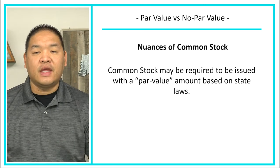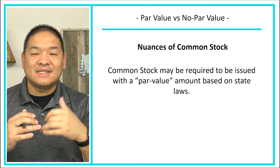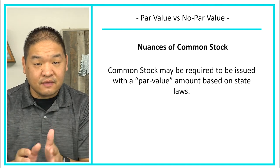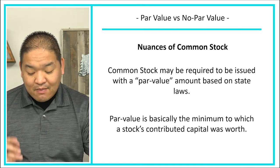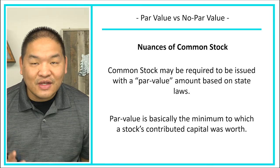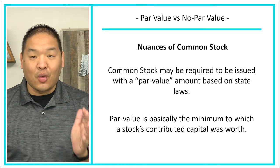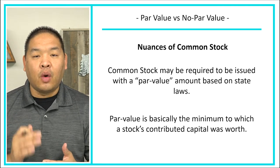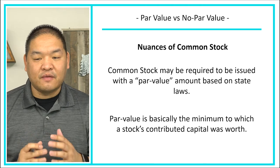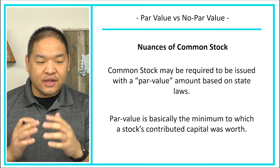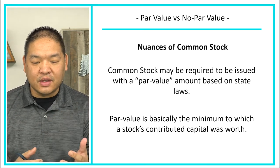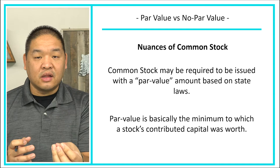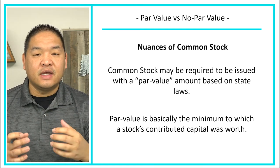Common stock may be required to be issued with a par value amount based on state law. State law might say that when you issue common stock you must have a par value. Par value is basically the minimum to which a stock's contributed capital is worth. If a company issues a stock with a par value of one dollar, the contributed capital of that stock at a minimum must be one dollar — meaning the stock cannot be sold for less than one dollar.